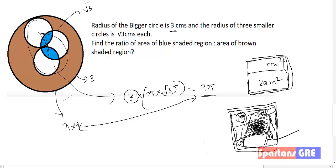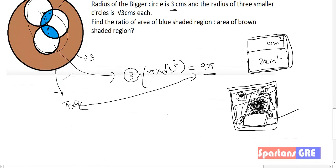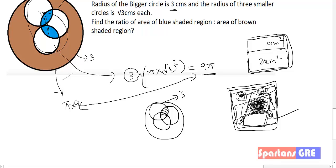Now, just for information — suppose the figure had the bigger circle of radius 3 cm with three smaller circles of radius √3 cm overlapping each other at a common central region. In that case, the Carpet Theorem does not work. Why? Because that central overlapping area is counted three times — it is included an extra two times — so there is duplicacy. That's why you cannot apply the Carpet Theorem there.